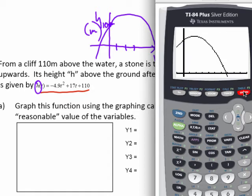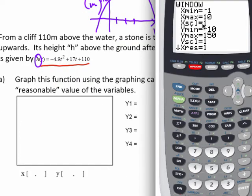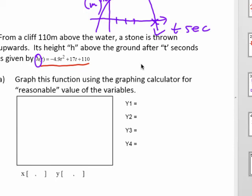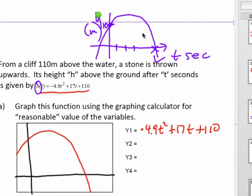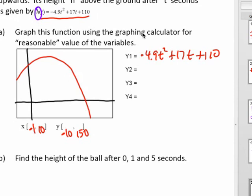And let's graph and see what happens. And there we go. I get a pretty decent looking picture of the rock's motion. So I want to record my picture here in the grid that's provided. Let's take a look at our window dimensions. Negative 1 to 10 for the high and low x. And negative 10 to 150 for the high and low y. Write your equation that you've entered. And then just a quick sketch of what you are looking at.